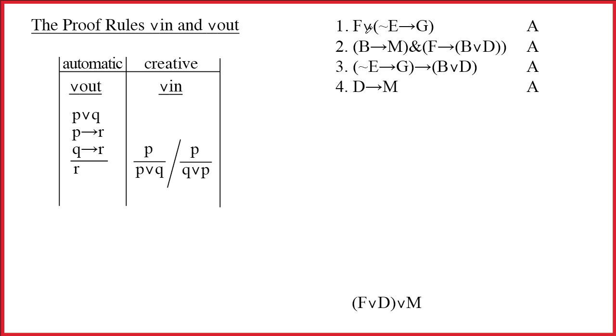The first line has a wedge as its main connective. That means we should think about wedge out. Although, to be honest, notice that line 2 has an ampersand as its main connective, so why don't we go ahead and break that up. Let's do the easy work first. So I get to write b arrow m on line 5, and then I get to write f arrow b wedge d on line 6. And then that will be 2 ampersand out done twice. I like ampersand out. Check it off.